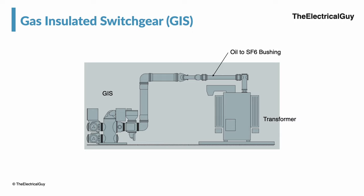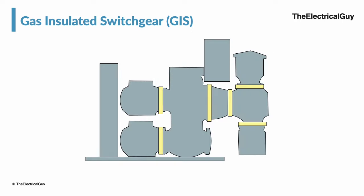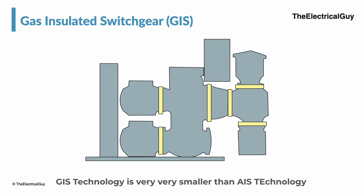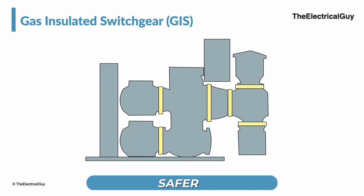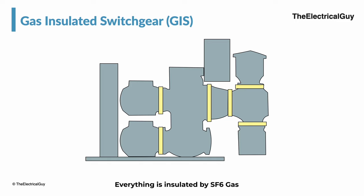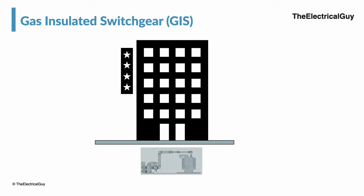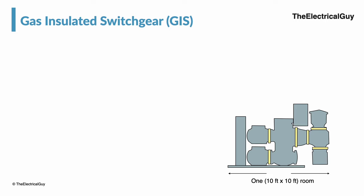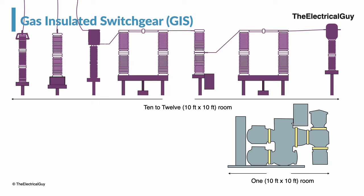Since the dielectric properties of SF6 gas are far better than air, GIS technology is very much smaller in size compared to AIS technology. This technology is also safer compared to AIS since everything is insulated by SF6 gas, and hence GIS is installed even at the basement of buildings. For comparison, one bay of 145 kV GIS can fit into one 10 by 10 room, whereas for one bay of 145 kV AIS we would need around 10 to 12 such rooms.